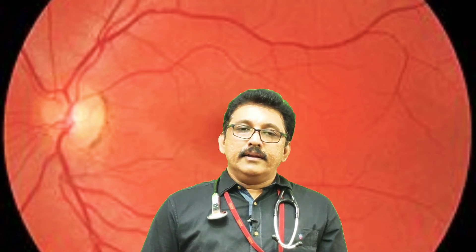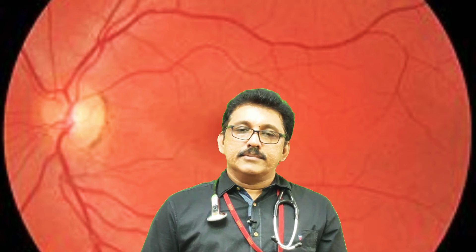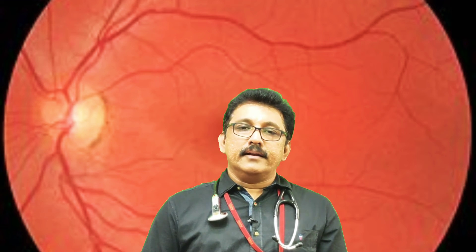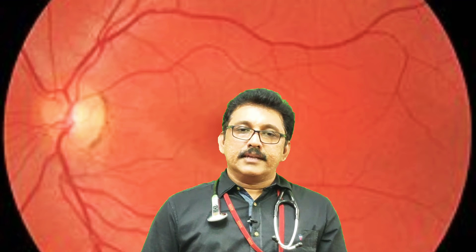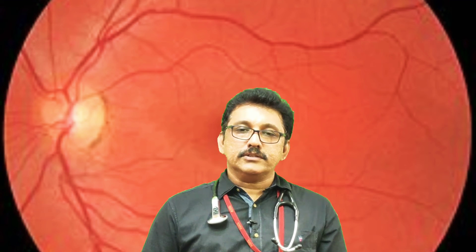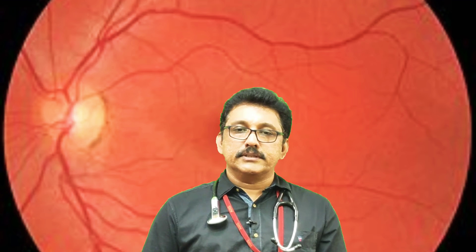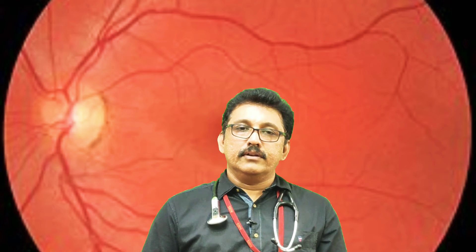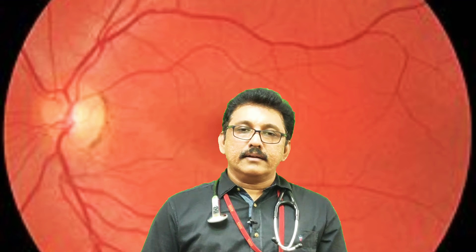Normally, both the same side and opposite side constrict when light falls on the face. In an optic nerve lesion, the pupillary reflex is lost on the ipsilateral side and the opposite side is also lost. In third cranial nerve lesion, only the side of the lesion shows an absent reflex.